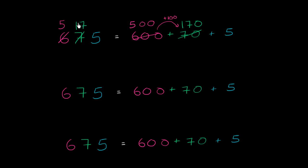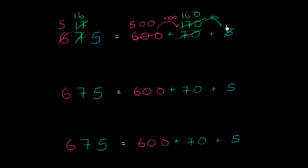We could keep doing that — regroup some of the value in the tens place to the ones place. For example, we could give 10 from the tens place to the ones place. So that becomes 160, or 16 tens. And the ones place gets 10 plus 5, which is 15.